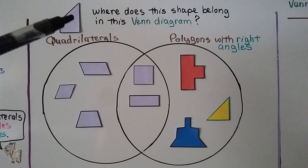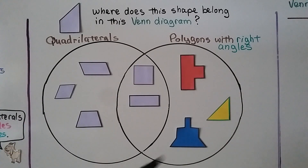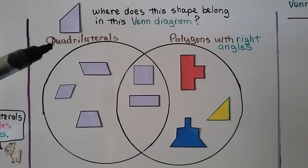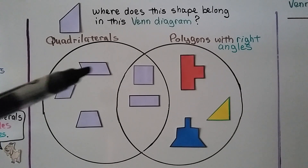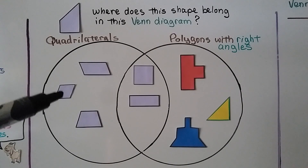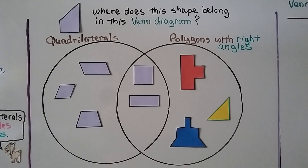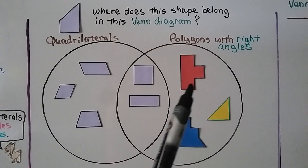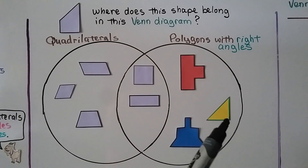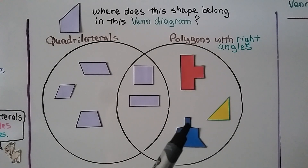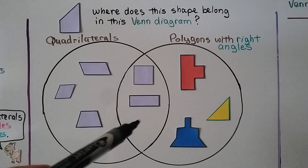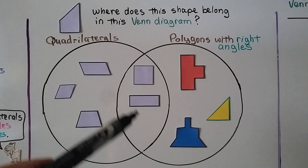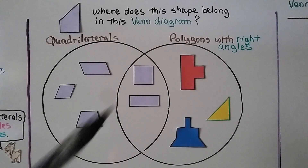Where does this shape belong in this Venn Diagram? Let's look at the labels. This circle is quadrilaterals — yes, that has four sides and four angles. This circle is polygons with right angles, and these have right angles. Where they overlap are quadrilaterals and polygons with right angles — a square and a rectangle.